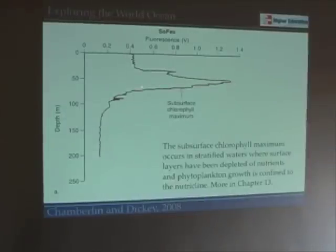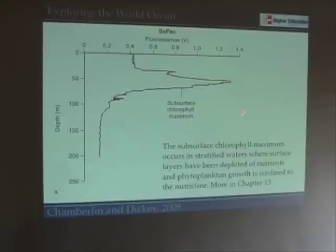Under some circumstances this subsurface chlorophyll maximum may be due to increases in actual cell numbers. But we can't always assume that, and any time we see this feature we have to make measurements that tell us whether it's more actual cells or the same number of cells with a greater amount of chlorophyll per cell.